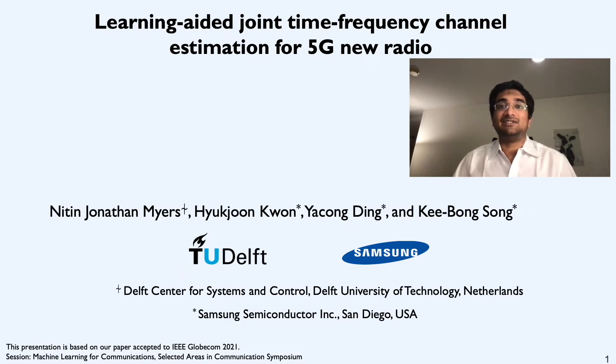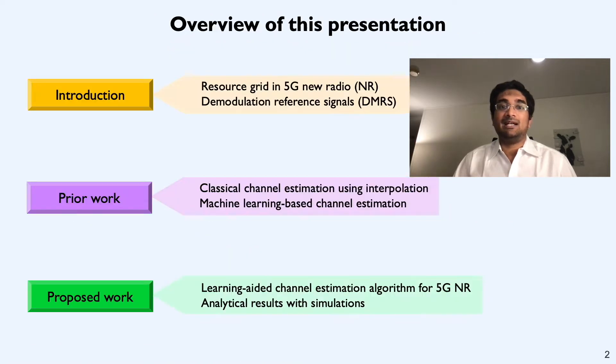Let's start with some overview of this presentation first. I'll begin by giving some quick introduction on the concept of resource grid and demodulation reference signals in 5G NR. Then I'm going to discuss how DMRS signals can be useful for channel estimation. I'm going to be talking about prior work based on signal processing and machine learning based solutions. Finally, I'm going to explain our proposed work on joint time frequency channel estimation for 5G NR.